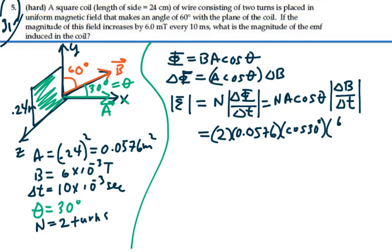Cosine of 30 degrees is 0.866. Let's just put in our 30 degrees here first. And then we have a 6 millitesla change in 10 milliseconds.